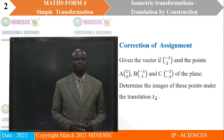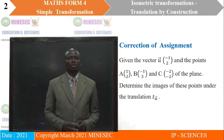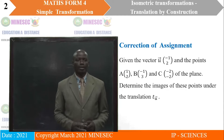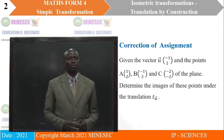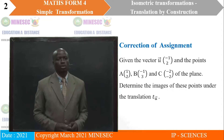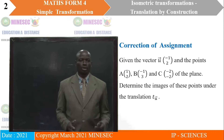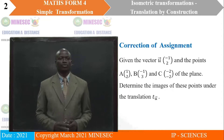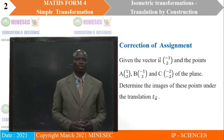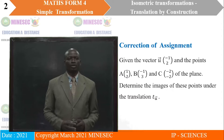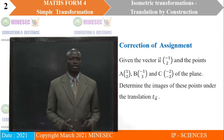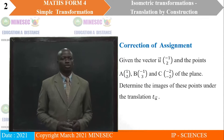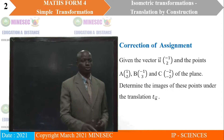Given the vector U(-1, 2) and the points A(1, 2), B(-1, 3), and C(-2, -2) of the plane, determine the images of these points under the translation T, TU.